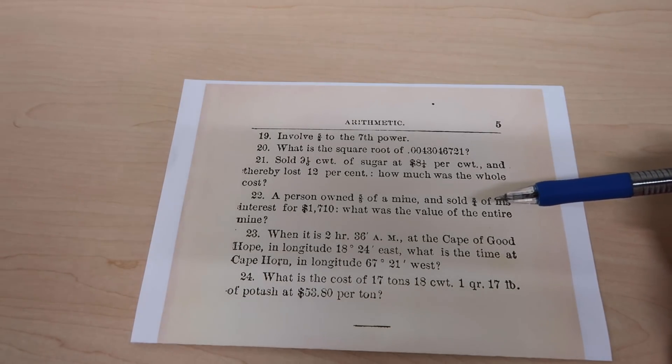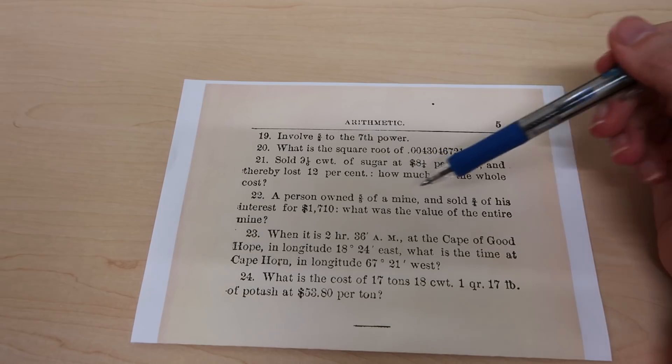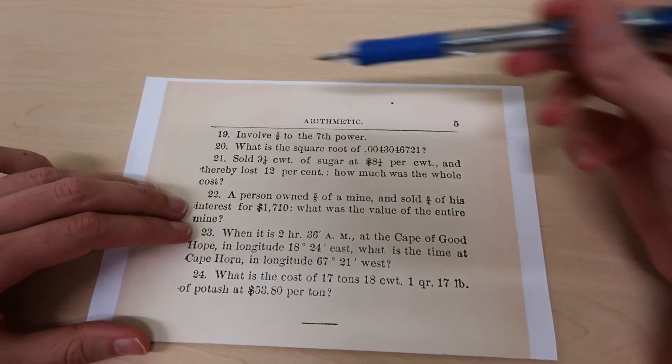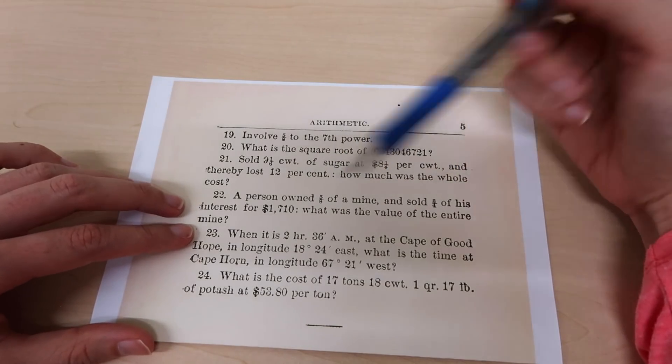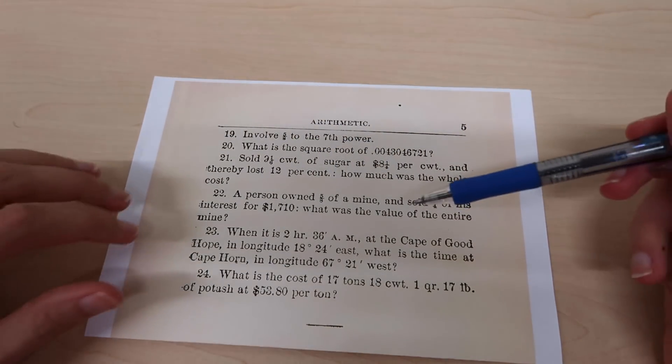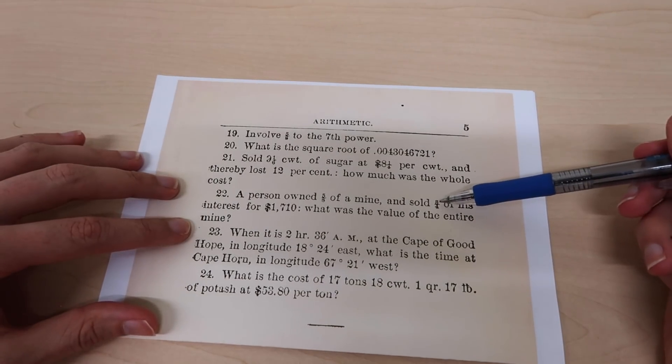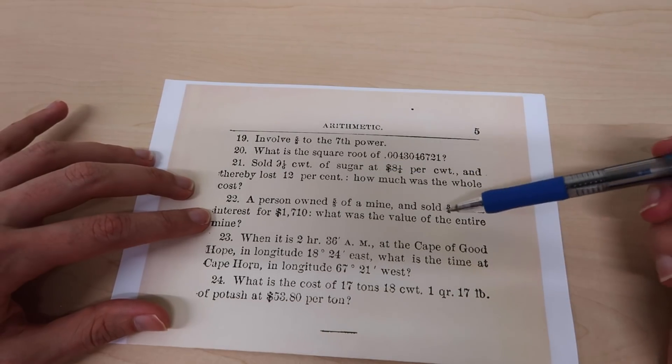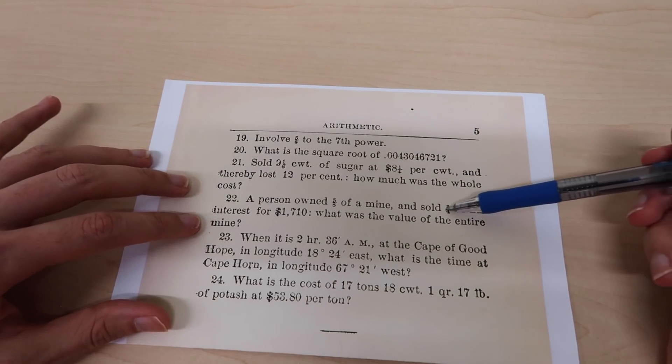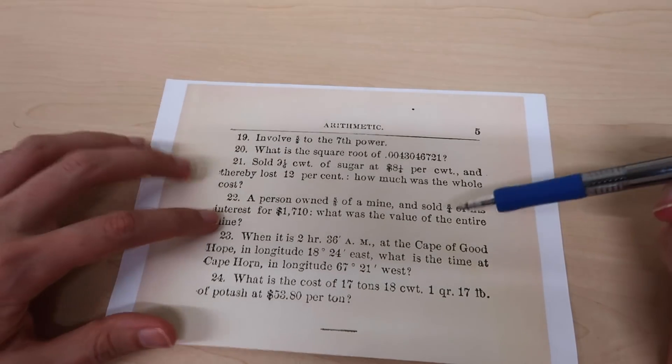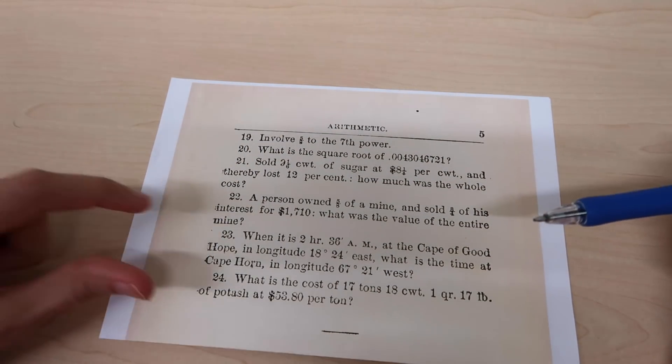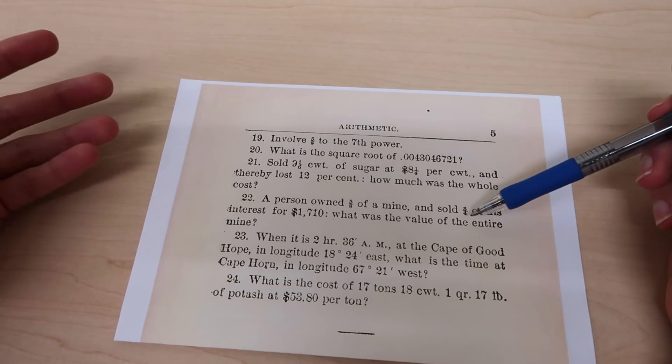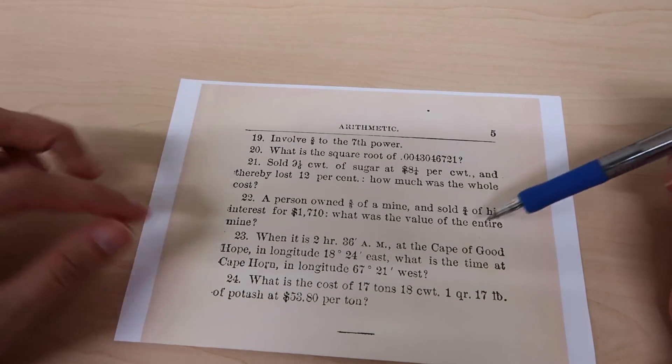Number 22: a person owned five eighths of a mine and sold eight quarters of his interest for this amount. What was the value of the entire mine? I feel like this would have made sense to me if he was selling some sensible portion of his share of the mine, but it seems like he's selling, well, two of his share. So I don't know how you can actually sell more than what you have. That's what it seems like to me. I guess this must be like a multiplication of fractions somewhere, but the wording is so awkward I'd probably be a little bit tripped here.